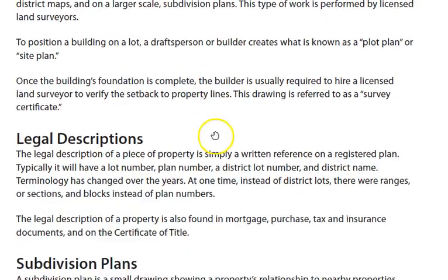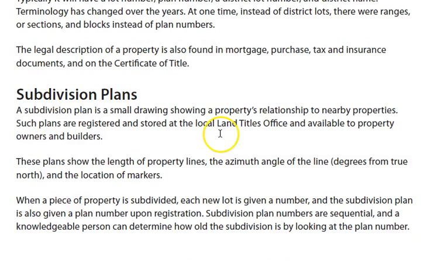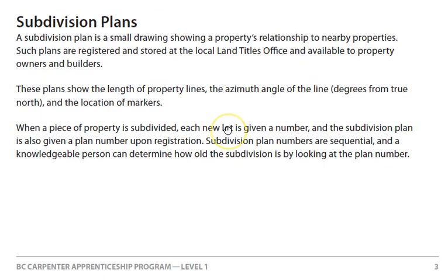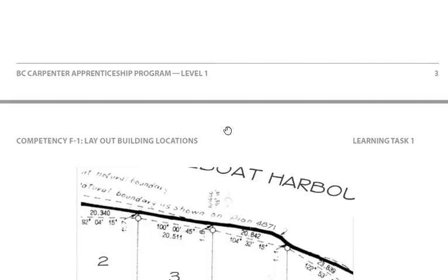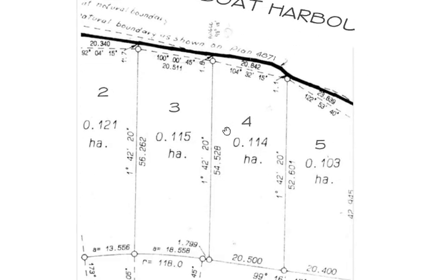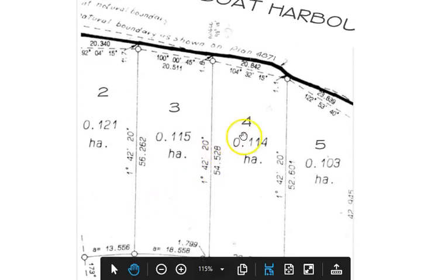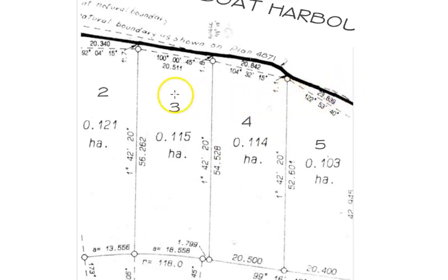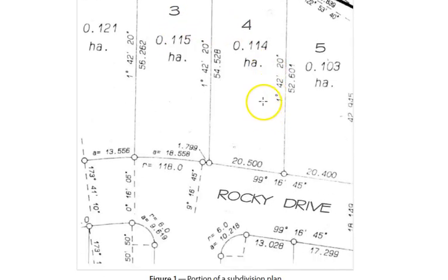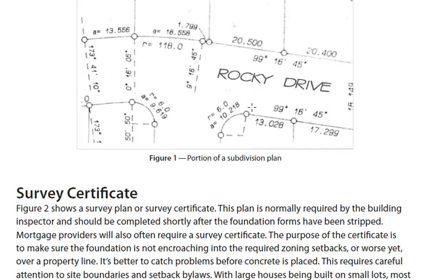We begin with a quick look at the types of plans you're likely to encounter at the beginning of a build. Here we have a subdivision plan which lays out many of the different particulars on the plot of land that you're going to be building on. Often it's from this where you get your allowances for building height, and that's where the percent grade factors into your build.